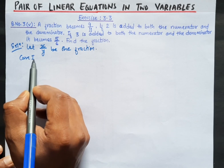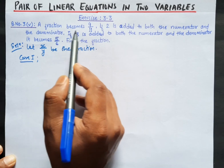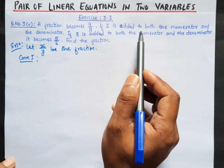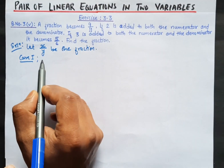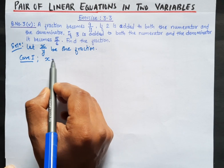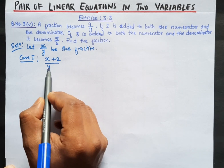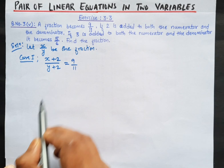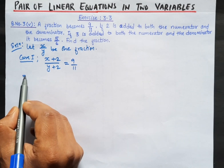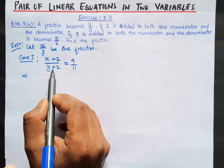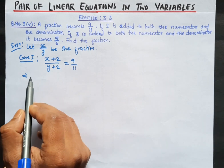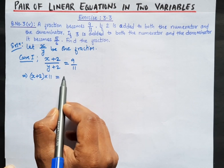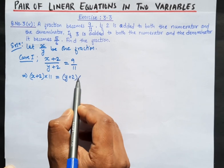Case 1: a fraction becomes 9 by 11. When does our fraction become 9 by 11? If 2 is added to both the numerator and denominator. So we add 2 to the numerator and 2 to the denominator, and our fraction becomes 9 by 11. Now we cross multiply: x plus 2 over y plus 2 equals 9 by 11, giving us x plus 2 into 11 equals y plus 2 into 9.